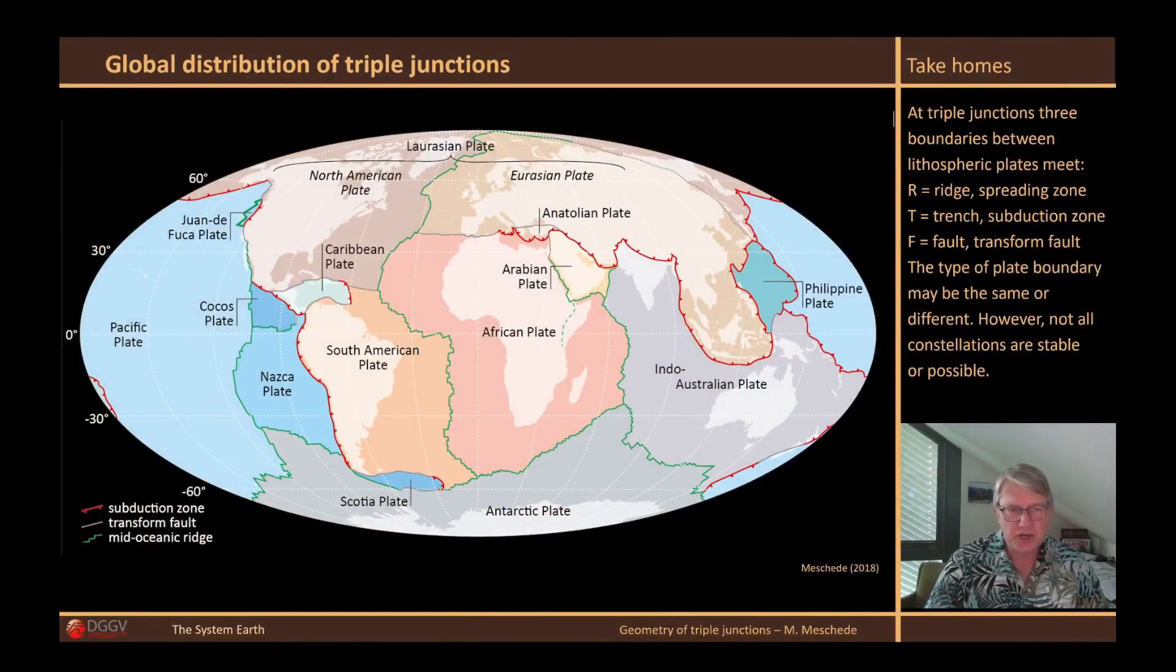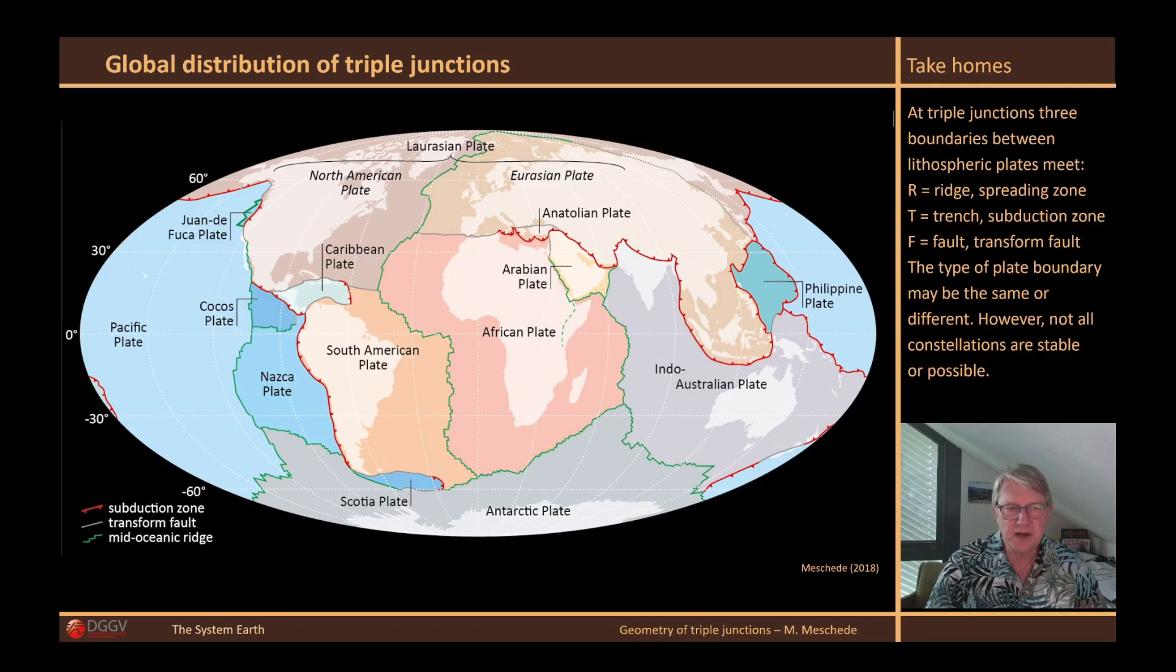This illustration, which I used already in some other videos of this series, shows the Earth's plate pattern, defined by plate boundaries. Here, however, we see only the large and medium-sized plates. But if we also count all the small plates, we can assume that there are around 50 independent plates today.